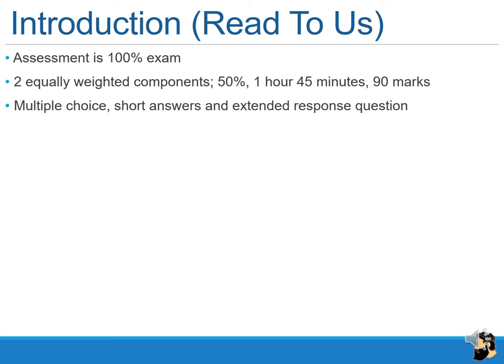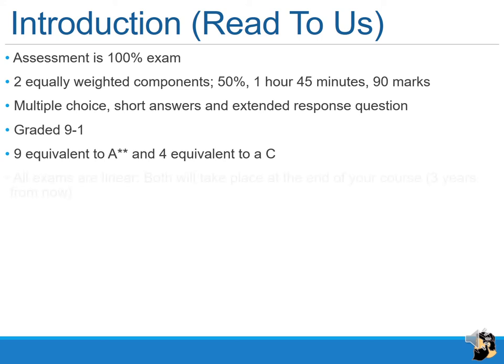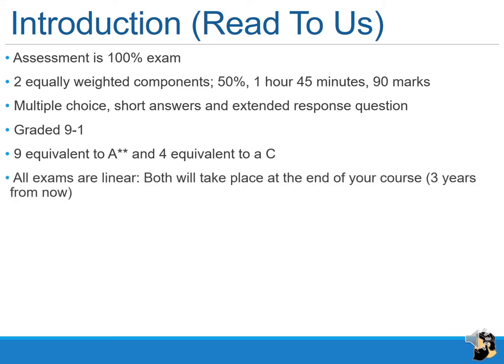The exam goes from easy to hard, graded 9 to 1. A grade 9 is equivalent to an A double star, and a grade 4 is the bare minimum you should aim for, equivalent to a C. All exams are linear, meaning both will take place at the end of the course — in three years if you're in Year 9, or two years if you're in Year 10.